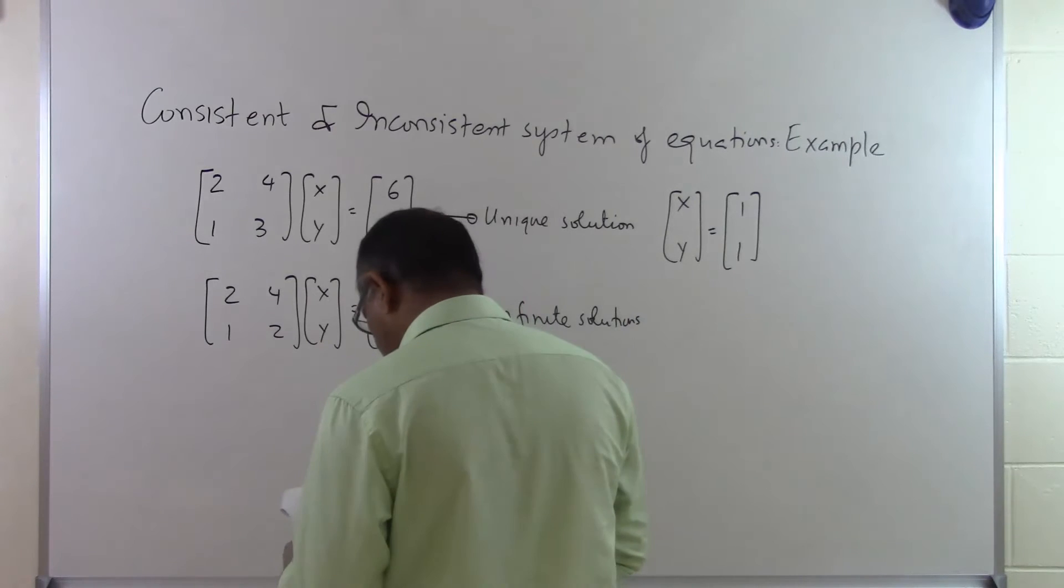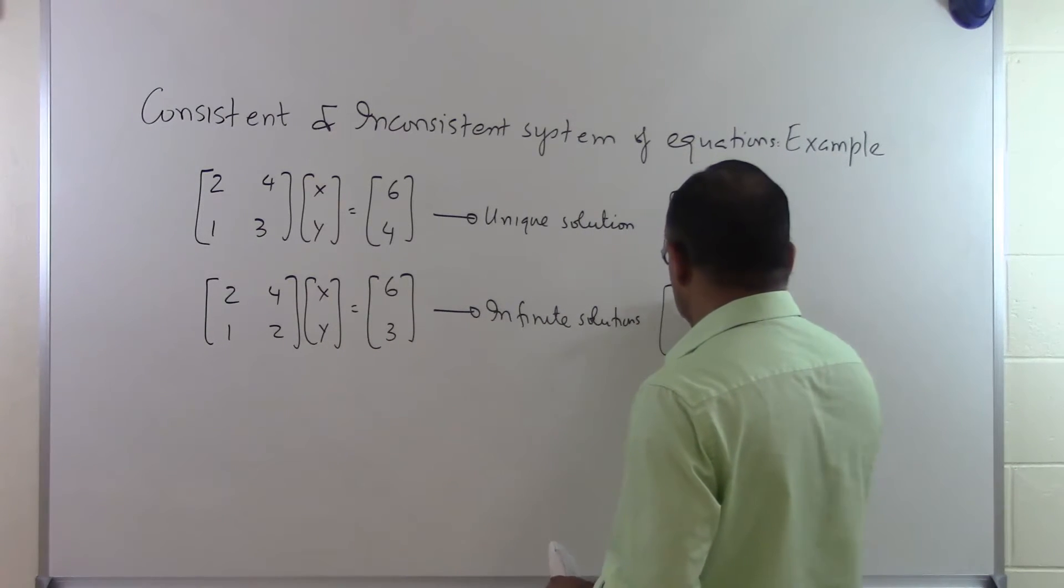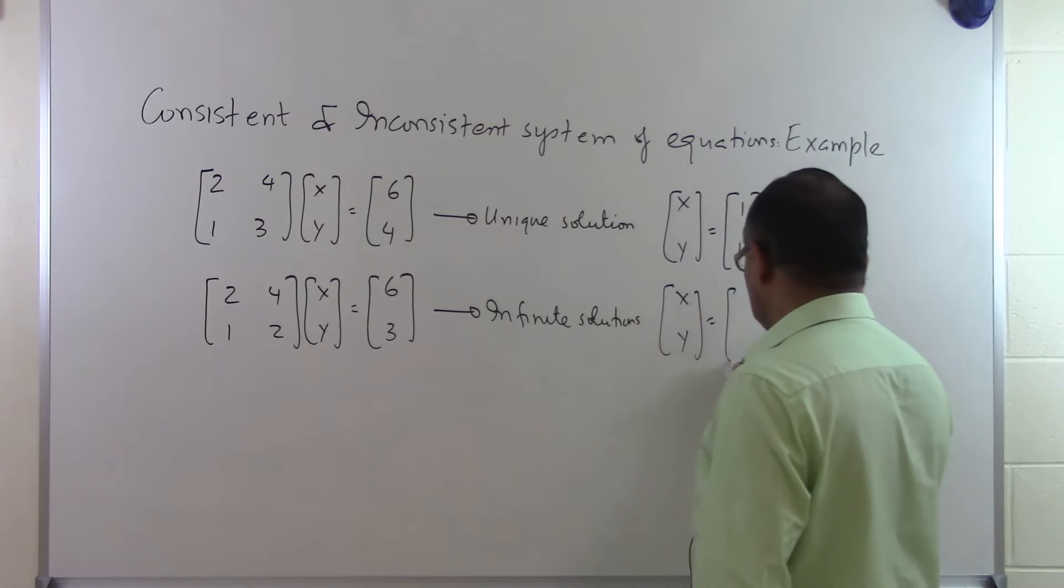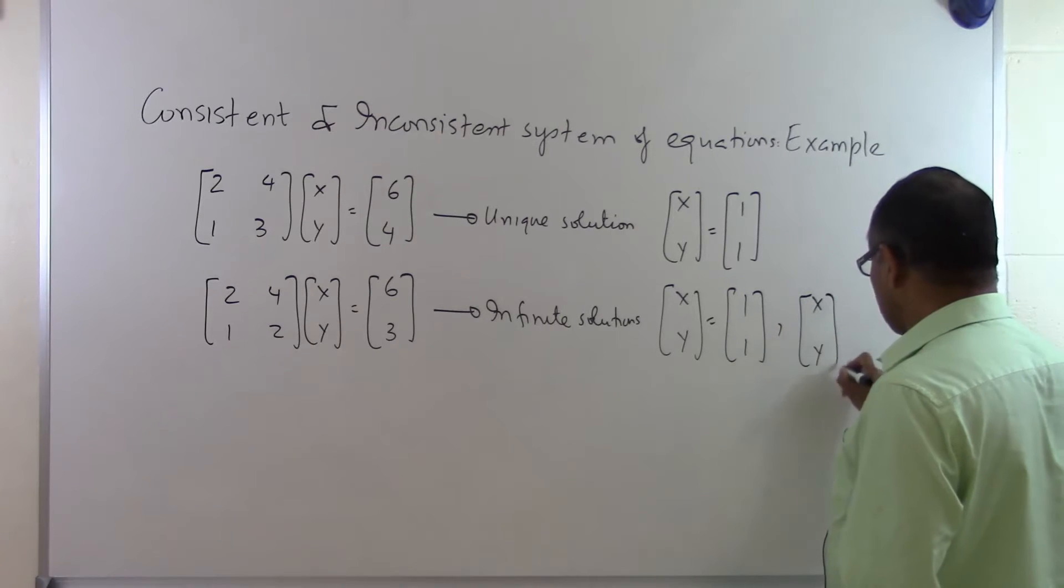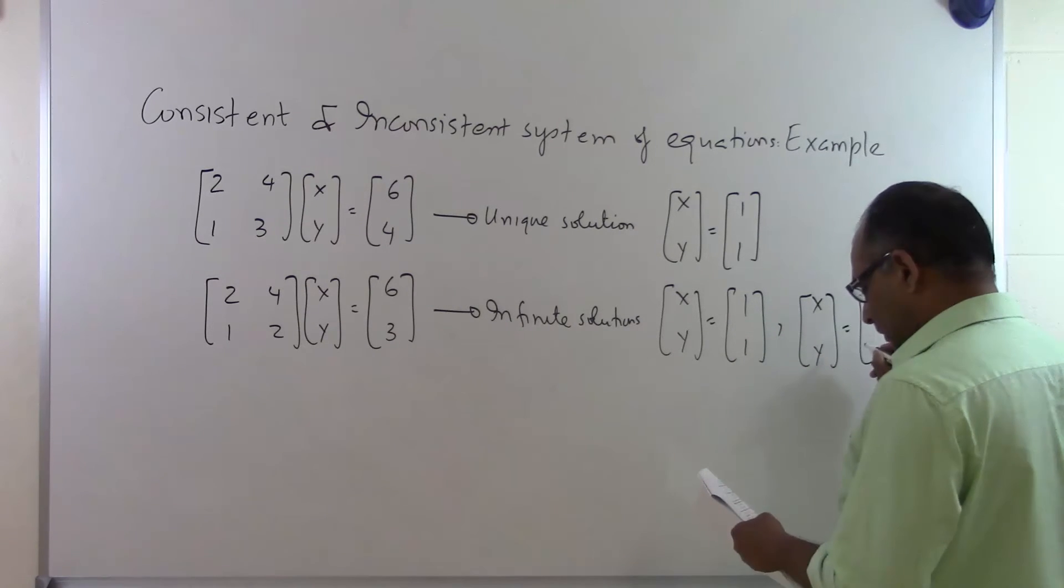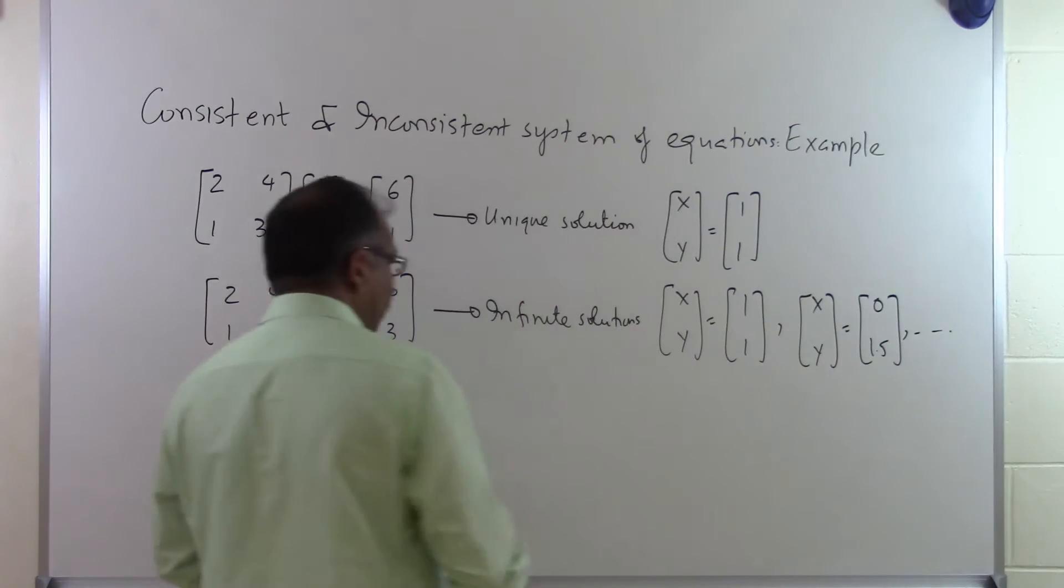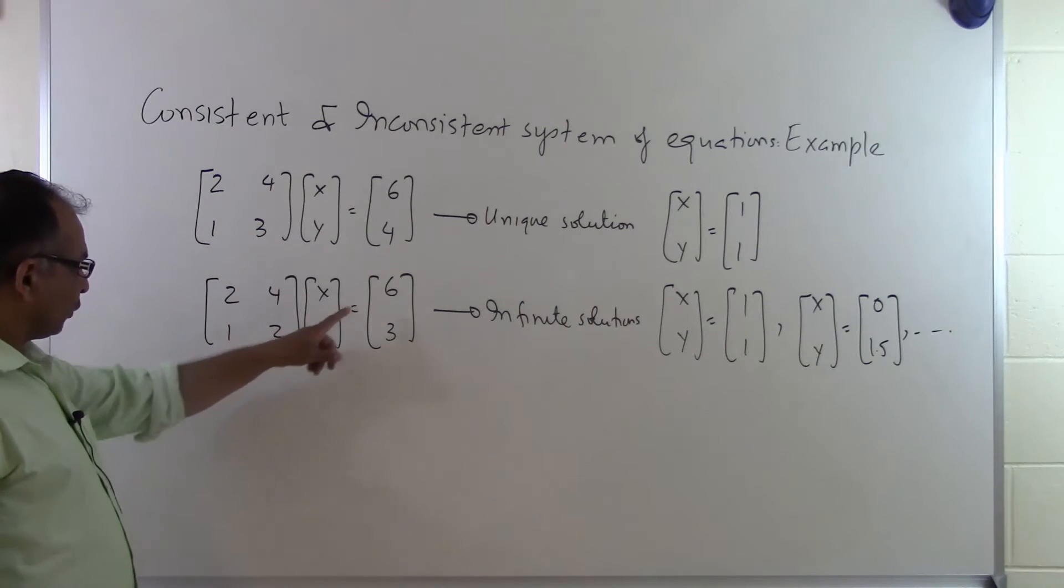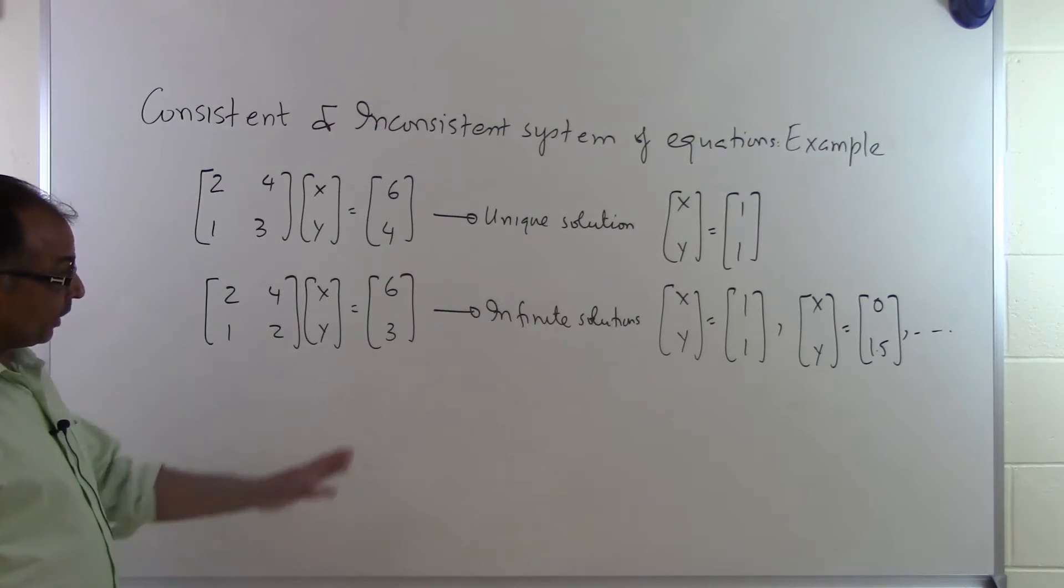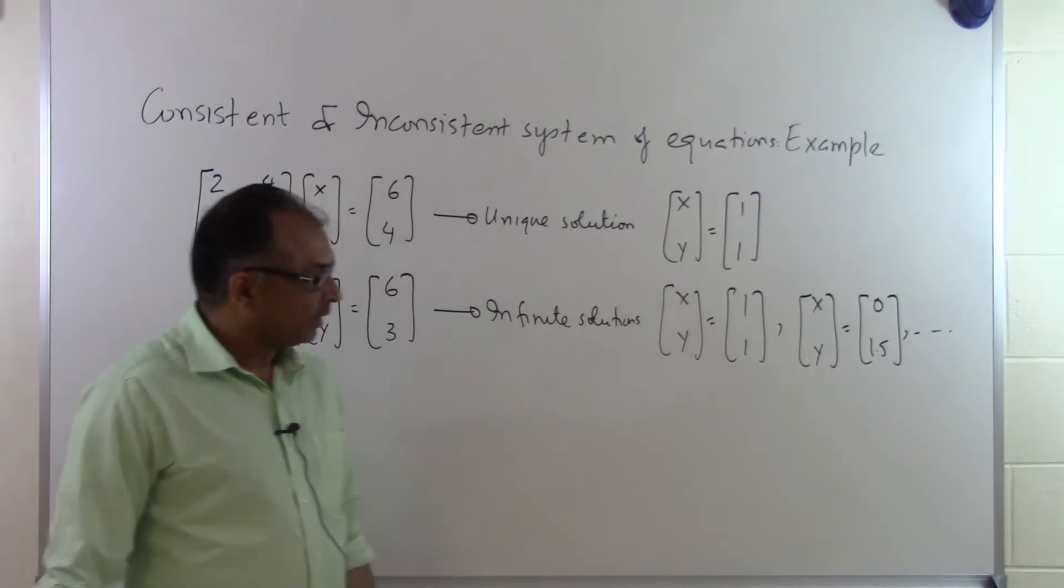So like for example, I can have [1, 1] as a solution. Another solution for this set of equations is [0, 1.5] and so on and so forth. In fact, you can put 1 and 1 and you get 6 and 3. If you put 0 and 1.5 you are going to get 6 and 3. But the number of solutions which you can find which look like this is infinite.